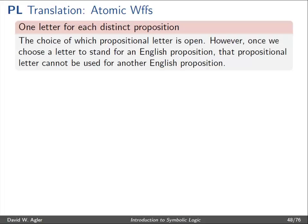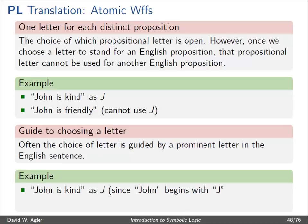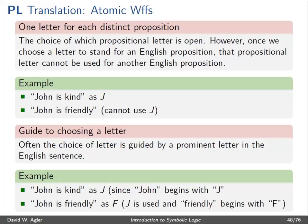However, once you choose a letter to stand for a specific English proposition, you can't use that letter to stand for another English proposition. In other words, you can't have a single letter in the language of propositional logic do double duty. Having translated "John is kind" as J, we couldn't translate "John is friendly" using J — we would have to pick another propositional letter. The general guide is to pick a letter that is most prominent in the sentence itself. In the case of "John is kind," we use J because John begins with J. Since J is already used, we'll use F to represent "John is friendly."